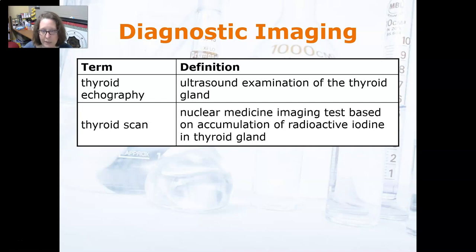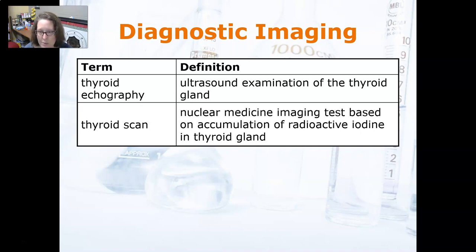For diagnostic imaging, a Thyroid Echography is an ultrasound examination of the thyroid gland, used to look for nodules, cysts, and other abnormalities to evaluate what's going on with the thyroid. A Thyroid Scan is a nuclear medicine imaging test based on the accumulation of radioactive iodine in the thyroid gland. That wraps up diagnostics of the endocrine system.